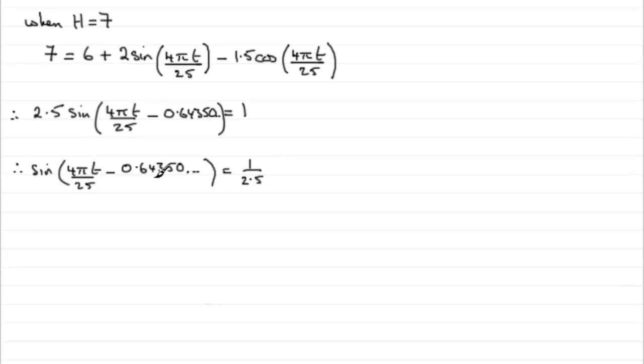So you need to inverse sine both sides next, and so that would just leave you with 4 pi t over 25 minus the 0.64350 and so on equals the inverse sine then of 0.4. What is the inverse sine of 0.4? Well, if you do that, make sure you're in radians mode by the way, you'll find you get 0.411516 and so on radians.